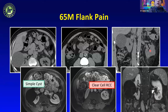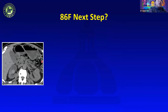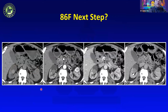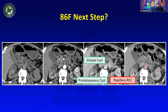Be aware that renal cell carcinomas tend to have intermediate attenuation similar to the background kidney and are hard to detect on non-contrast images. Another patient with multiple lesions of different attenuation — low, high, and intermediate — required a renal protocol exam. Multi-phase images showed a simple cyst, a hemorrhagic/proteinaceous cyst, and a left renal lesion with avid arterial enhancement with washout, confirming renal cell carcinoma.